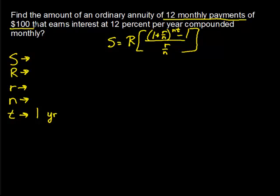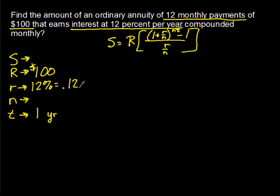As we read through the problem: 12 monthly payments means one payment every month for 12 months, which is one year, so t equals 1. The payments are $100 each, so capital R equals 100. It earns interest at 12% per year, so lowercase r is 0.12. Compounded monthly means interest is added every month, so lowercase n is 12. We now have four of the five pieces, so we can find capital S.